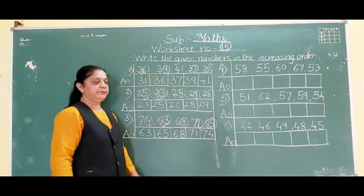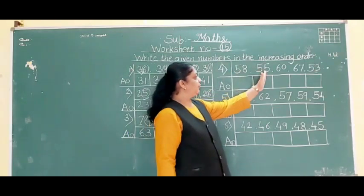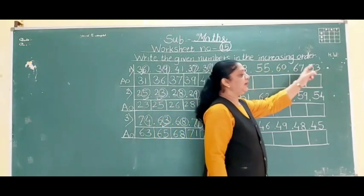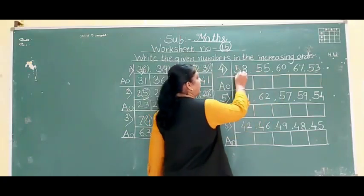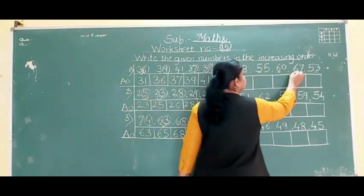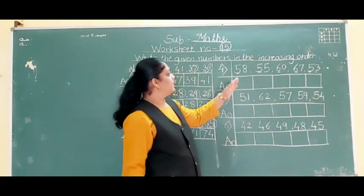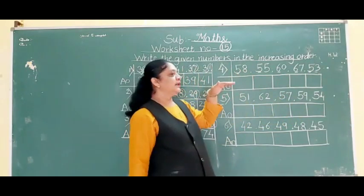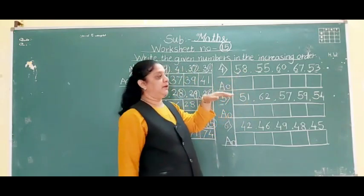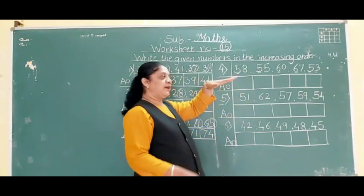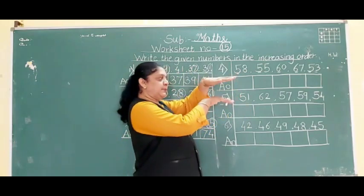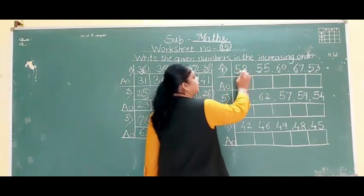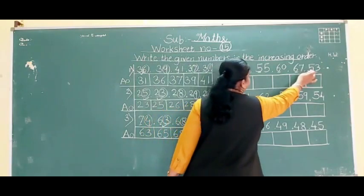Understood? Now: 58, 55, 60, 67 and 53. First digits: 5, 5, 6, 6, 5. Numbers with 5 first: 58, 55 and 53. Numbers with 6: 60 and 67. 5 is above, 6 is below, so 5 comes first.